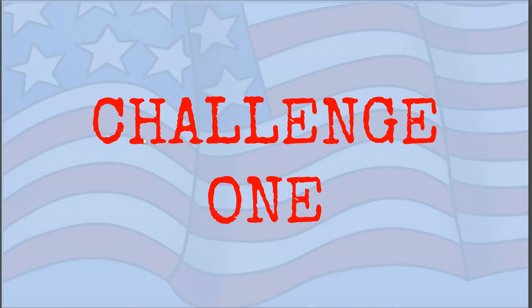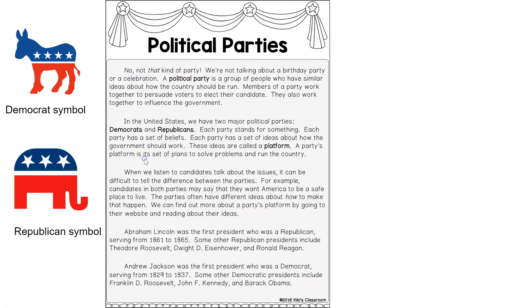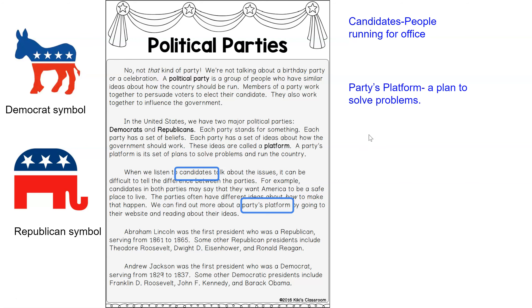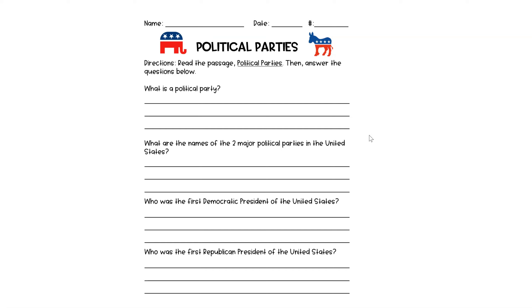It is your turn, boys and girls. There are three challenges that you can complete today. Challenge one is about political parties. You will read the passage and complete the questions on the next slide. Some vocabulary words to note: candidates are people running for office or running for President of the United States, and a party's platform is a plan to solve problems. Please remember to use RACE: Restate the question, Answer the question, Cite text evidence from the article, and Explain if needed.